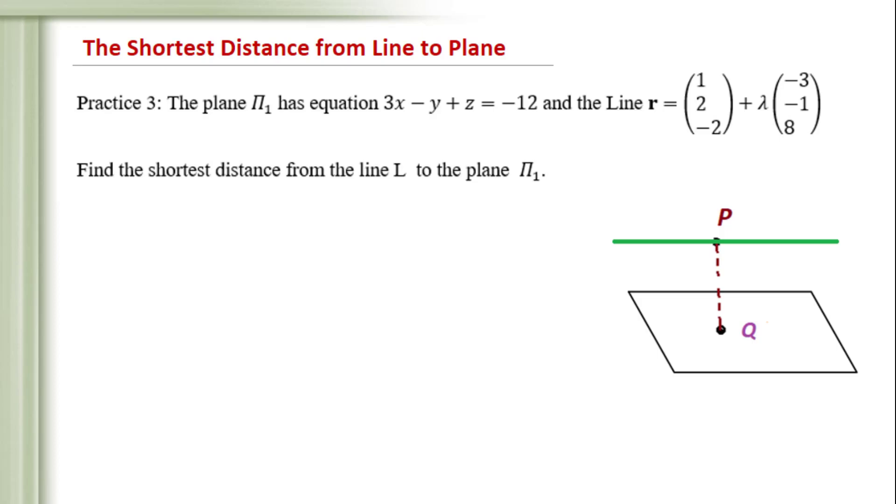First of all, you need to figure out the relationship between the line and the plane. If these two intersect each other, the shortest distance is 0.